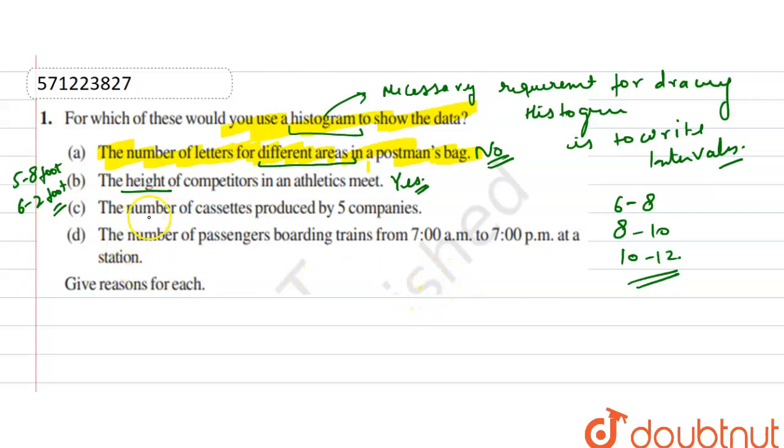Part C is the number of cassettes produced by 5 companies. We can't make it in intervals, so no.